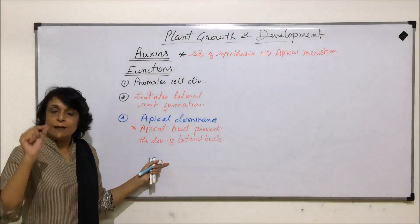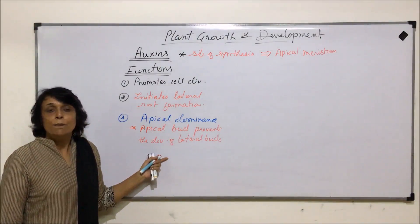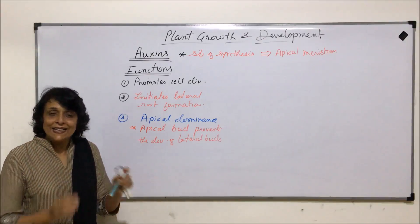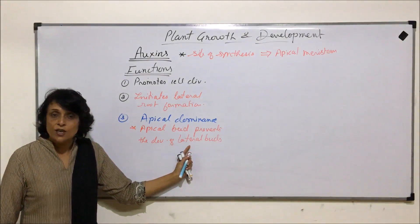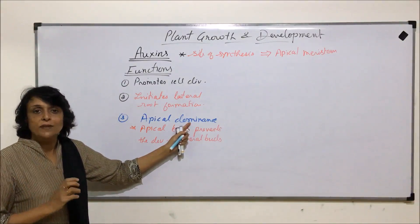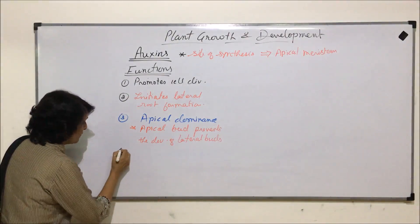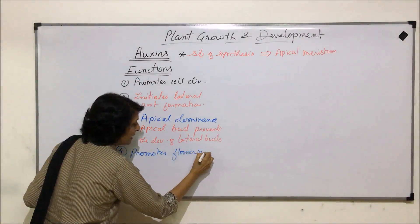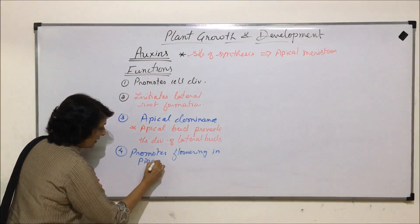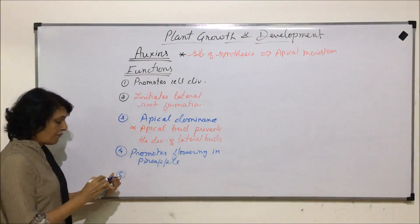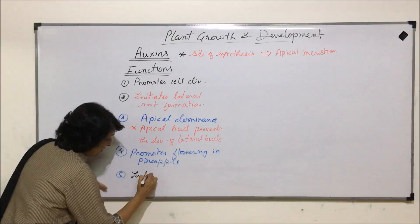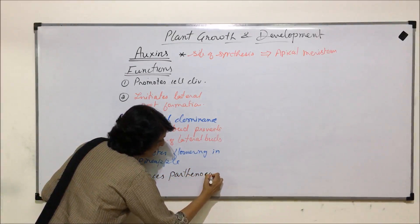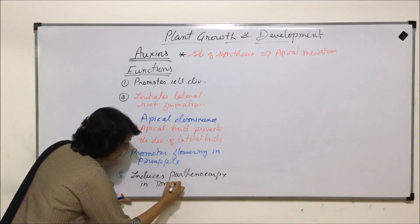Normally, the stem tip and root tip keep secreting auxins, because of which the plant grows in height or length. Once it attains a certain height, branching starts and branches develop from lateral buds. As long as the apical bud is controlling or dominating, lateral buds will not grow. Another function of auxins is that it promotes flowering in pineapple. It also induces parthenocarpy in tomatoes.